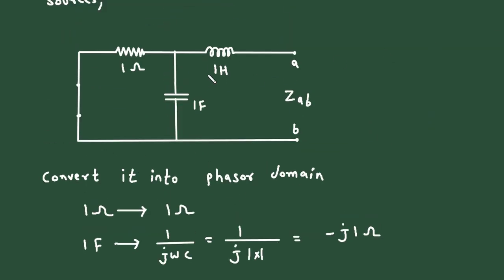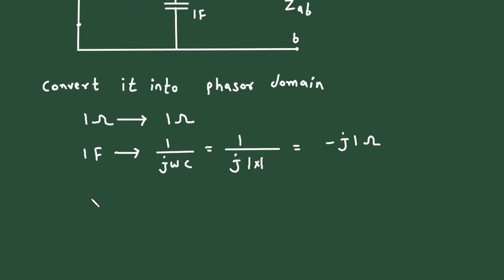Then here this 1 henry. So 1 henry will change to j omega L. So j times omega value is 1 times inductance value is also 1. So it will be j1 ohm.